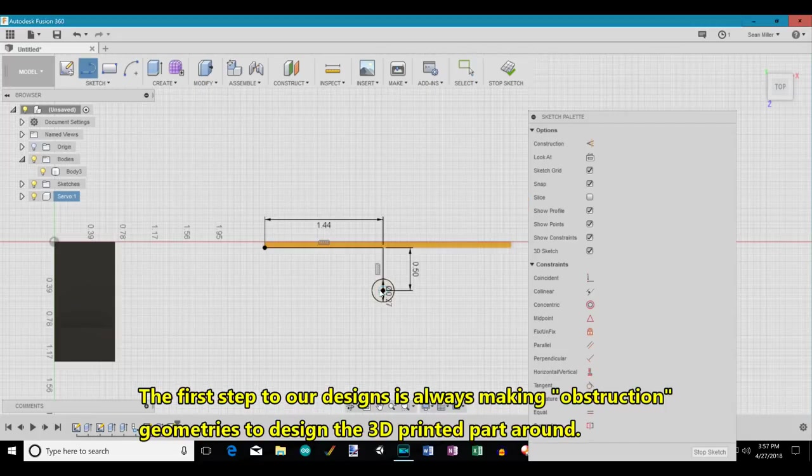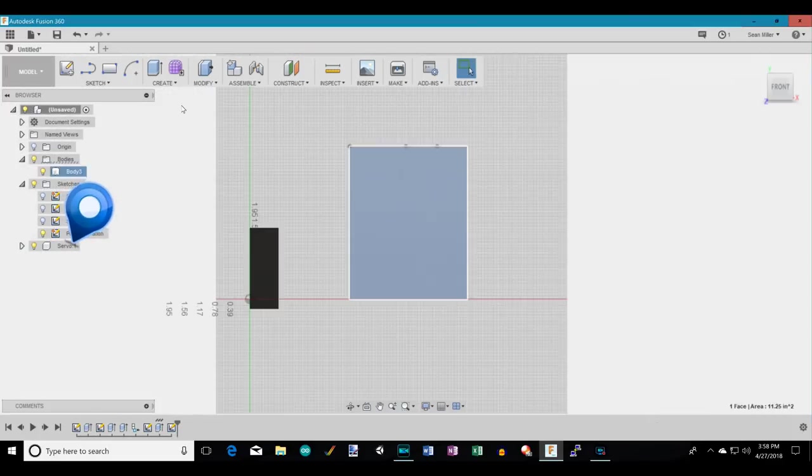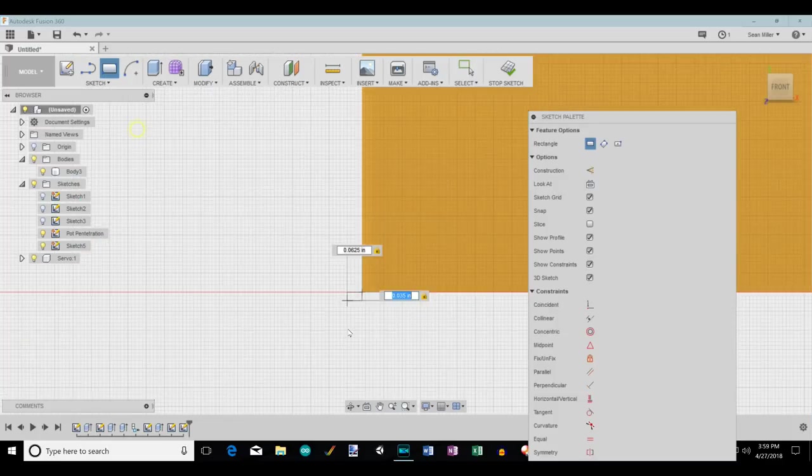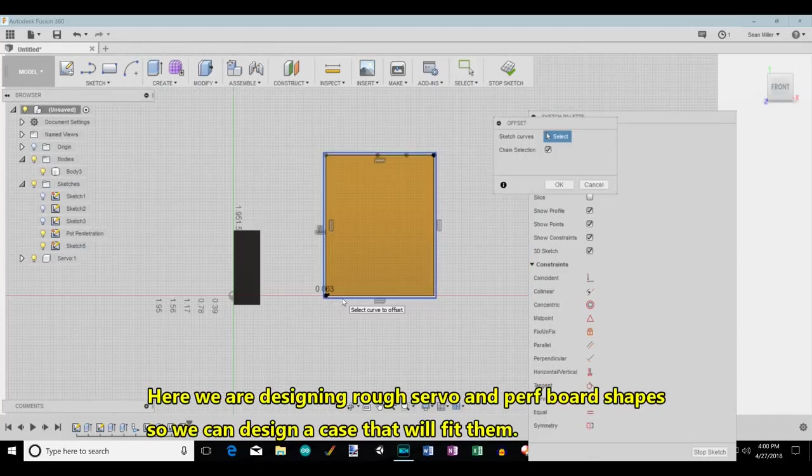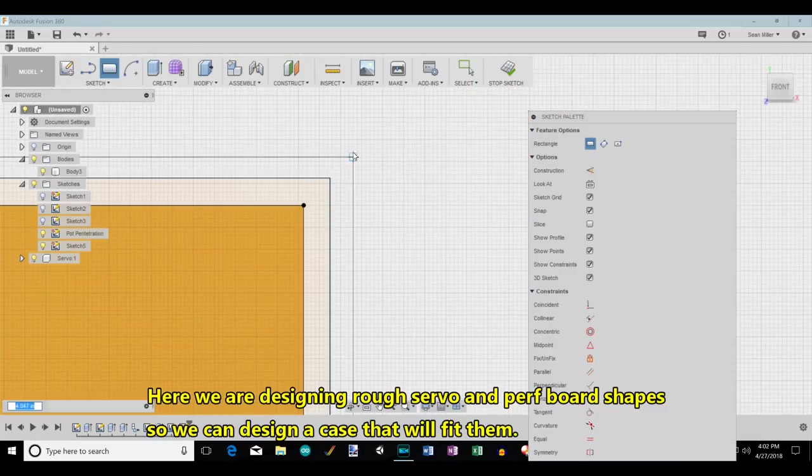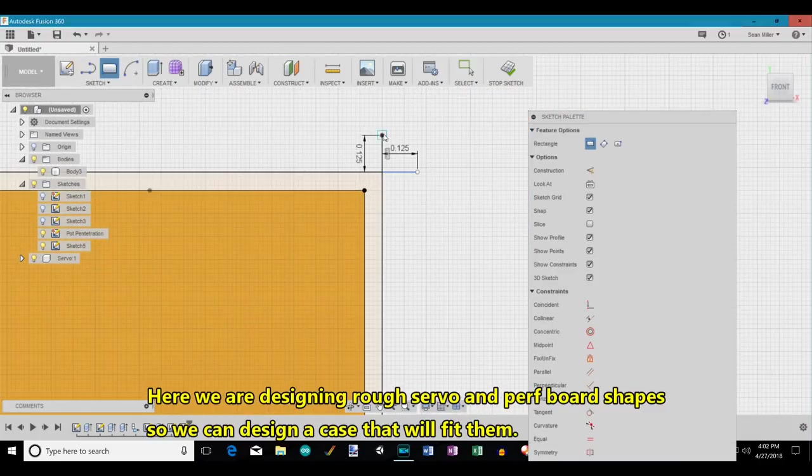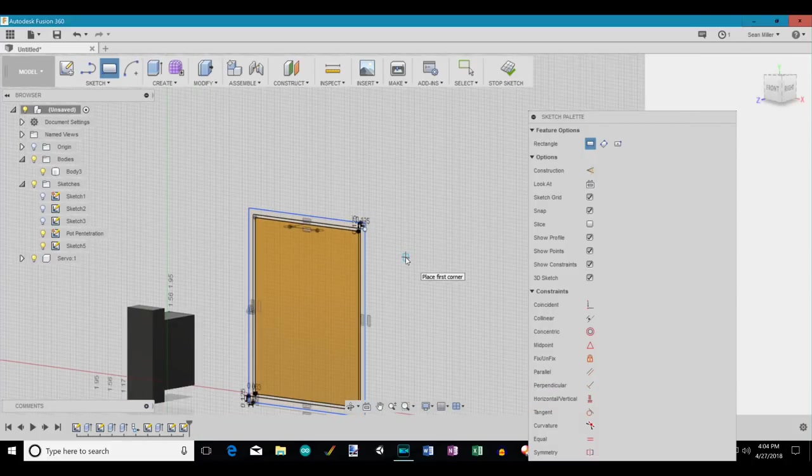When extruding your first sketch, have it make a new component versus just a body. For any bodies you have, be sure to make them components or move them into an existing component. Straight bodies look rookie. For parts that won't be printed, but are needed for sizing your printed part, only spend time on the detail you need or you'll just be wasting time. Often, you just need simple blocks or cylinders to serve as reference obstructions and cutting tools.